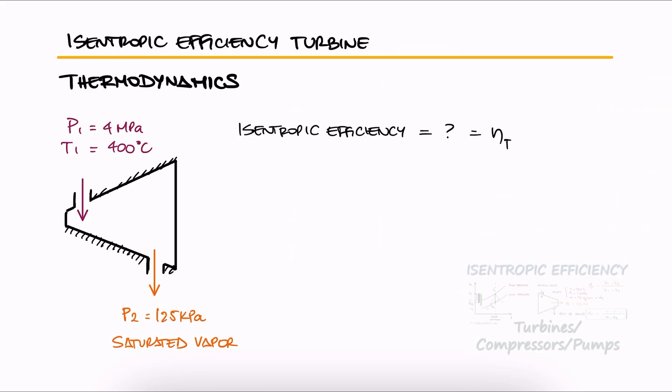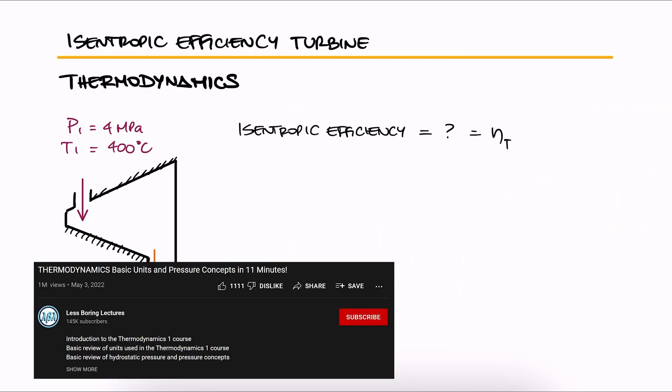This is the third example for the Isentropic Efficiency main lecture. The link to that 8-minute lecture and all the other examples and lectures of the thermodynamics course are found in the description below.